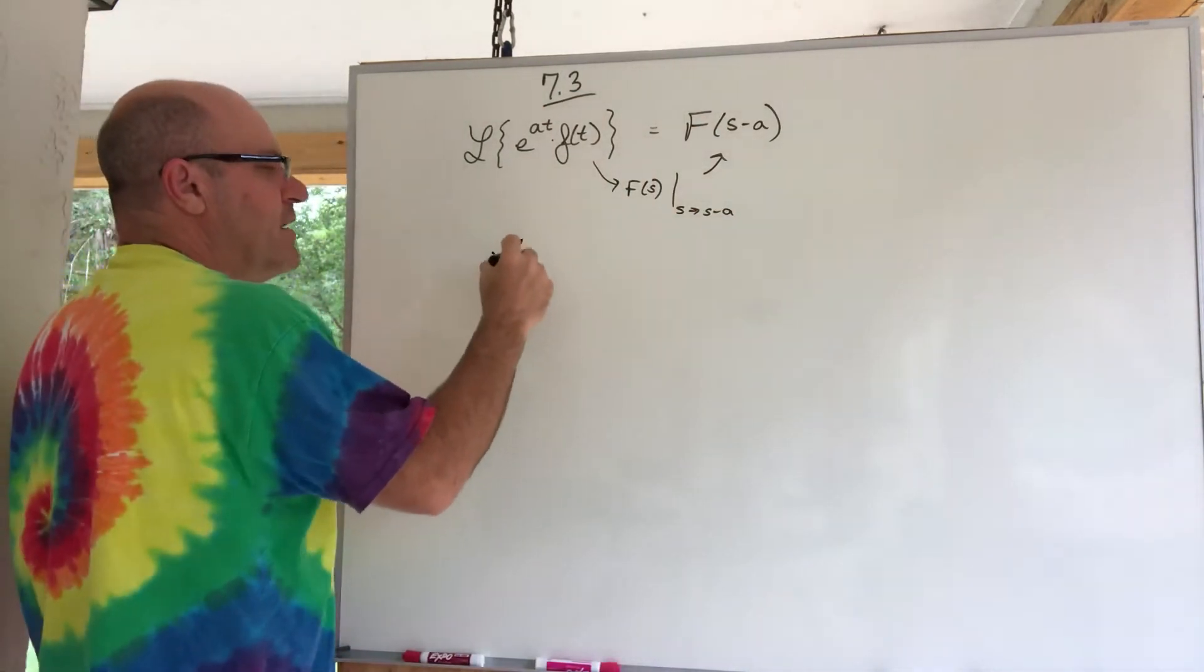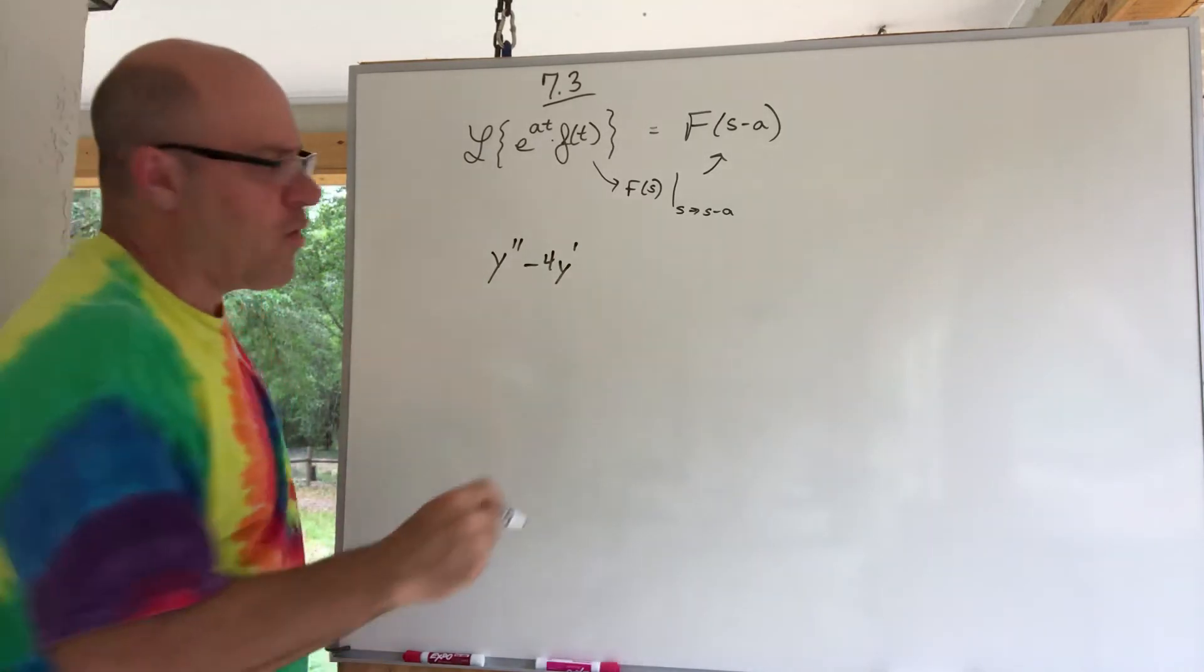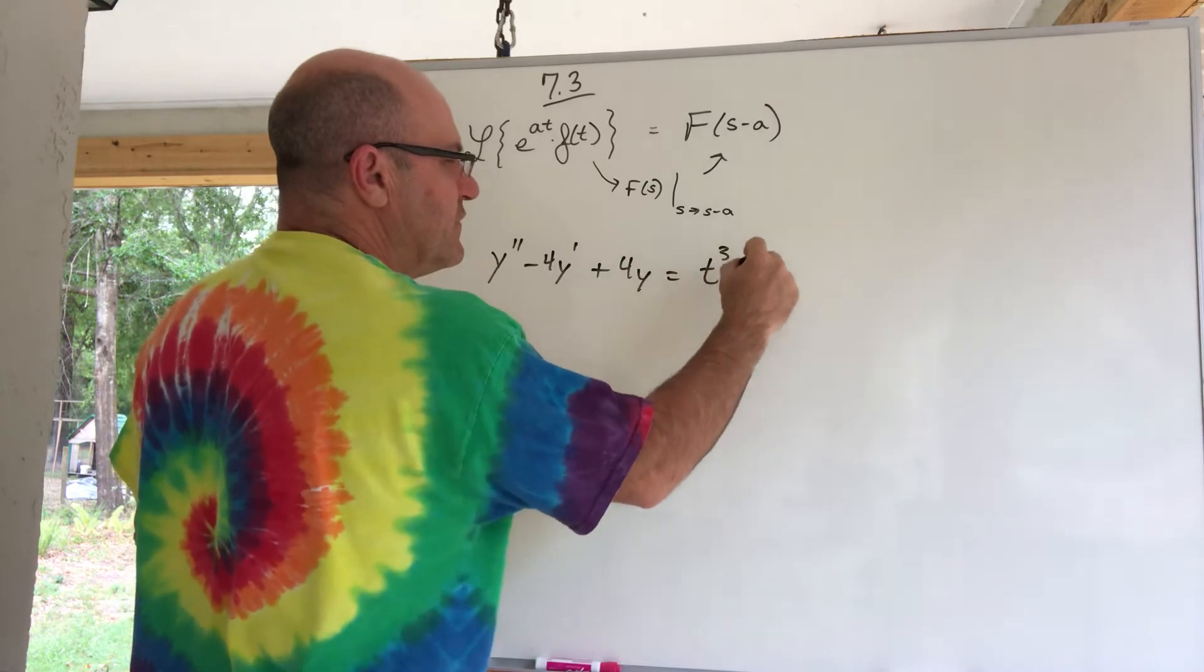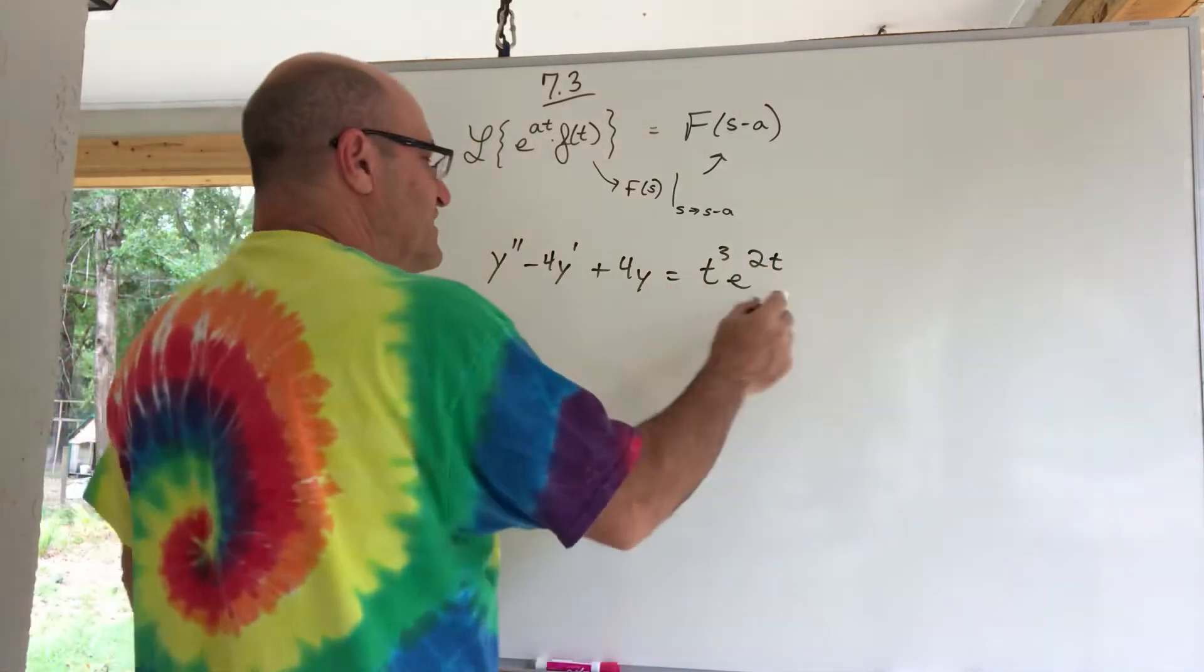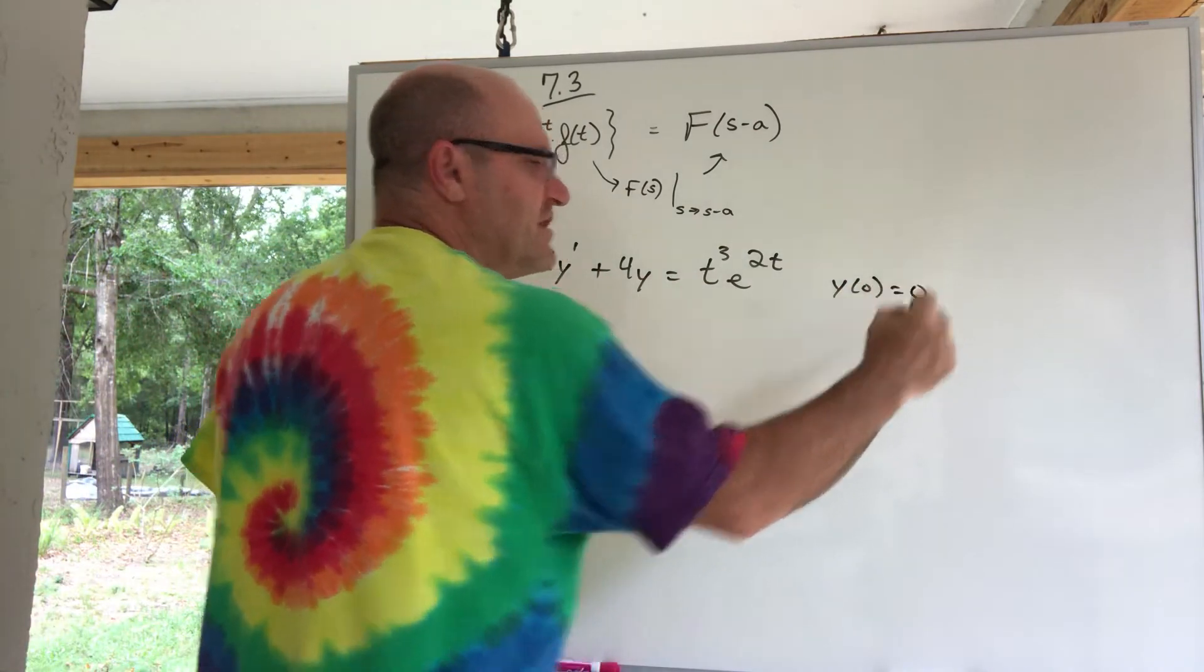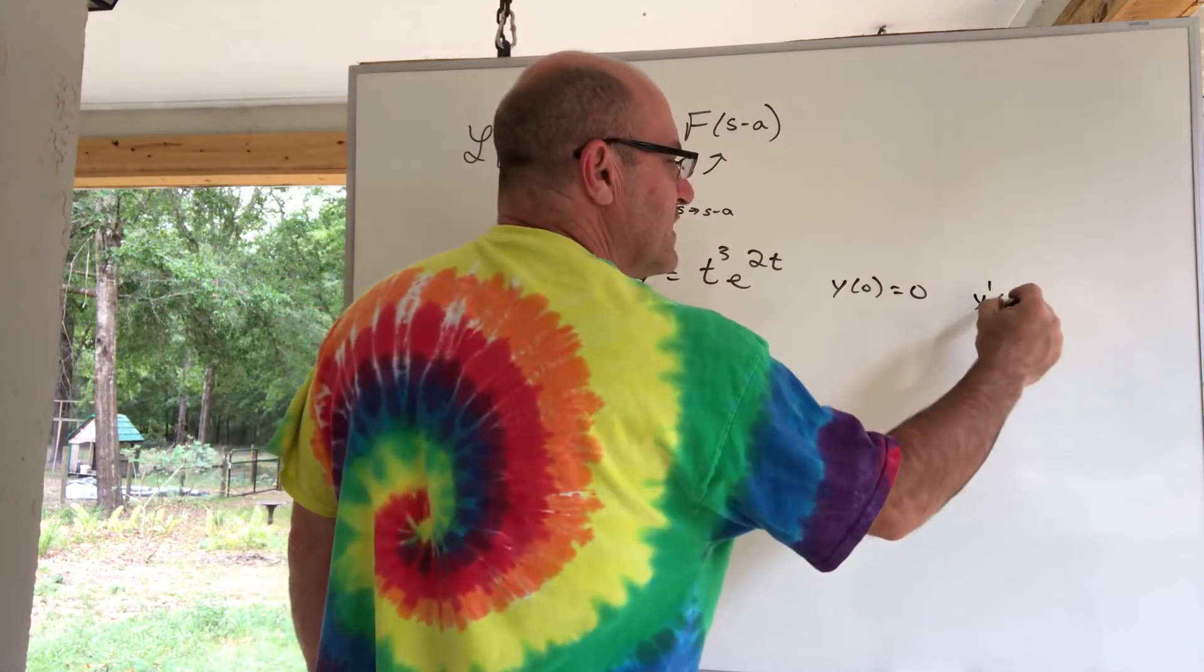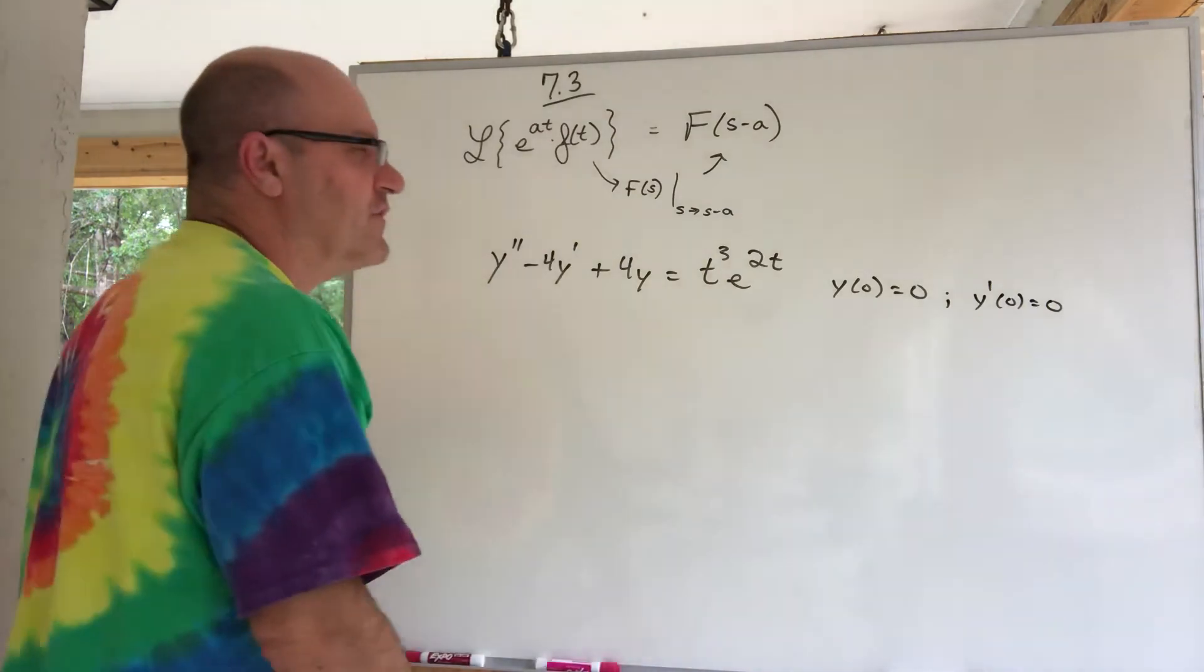And it is this. Y double prime minus 4y prime plus 4y equals t cubed e to the 2t. I'm not sure where I got this. This might be in the book someplace. This is a differential equation with a couple initial conditions: y of 0 equals 0 and y prime of 0 equals 0. Oh, that might be nice. Both those initial conditions are 0.